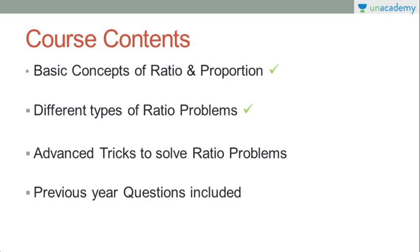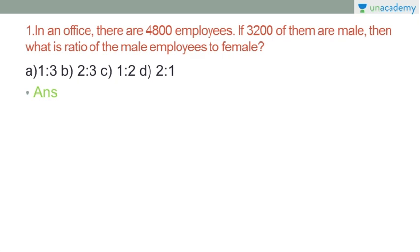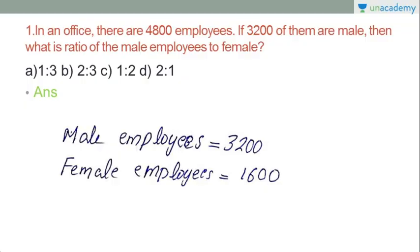In a PSE ratio question, we have four thousand employees. There are four thousand employees, and three thousand two hundred of them are male. Then what is the ratio of male employees to female? So female will be 1,600.